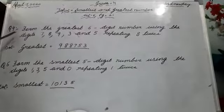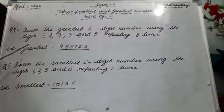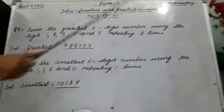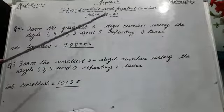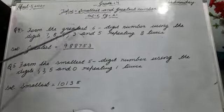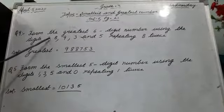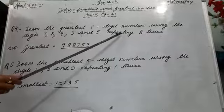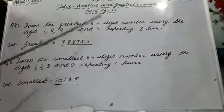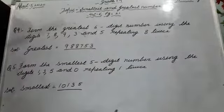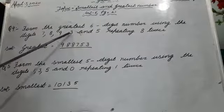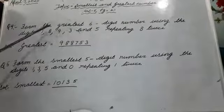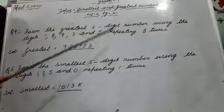Now let's start question number 4: form the greatest 6-digit number using the digits 7, 8, 9, 3 and 5, repeating 8 twice. So 8 is to be written 2 times — that makes 6 digits total.